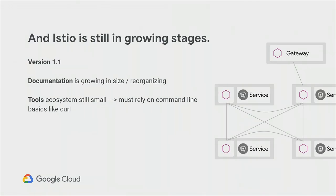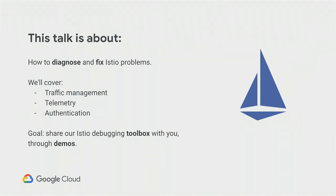As developer relations for Google, we really want to know how folks are using Istio and where the gaps are in the tooling and ecosystem. You'll see us using things like curl throughout this demo — and if you've used Istio, you may also find yourself stuck in a loop of repeatedly curling when things go wrong. We acknowledge that. We're going to go into three hands-on demos: traffic management, telemetry, and authentication.